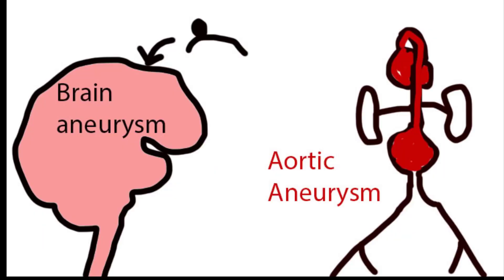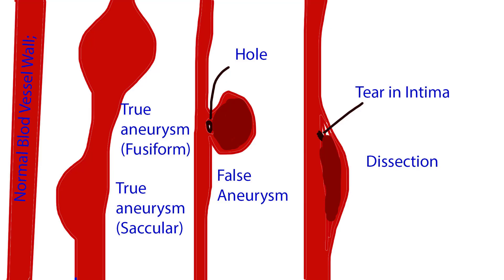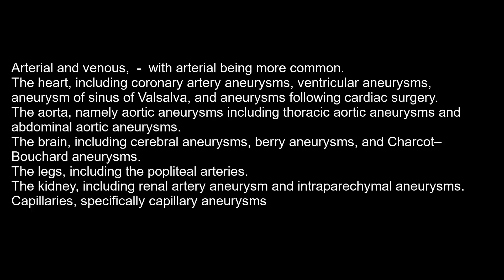Particularly notable examples include aneurysms of the circle of Willis in the brain and aortic aneurysms. An aneurysm may be true or false. A true aneurysm involves all layers from the intima to the adventitia. In aortic dissection, blood enters the media of the vessel and splits the aortic wall under pressure, dilating the aorta only in the area where the dissection is present.